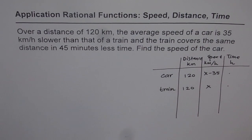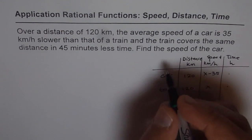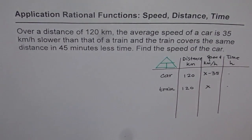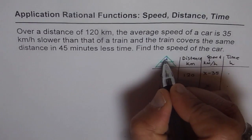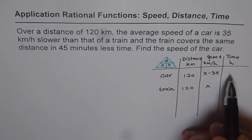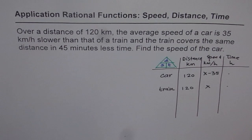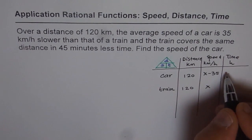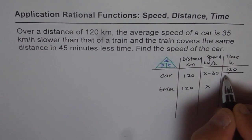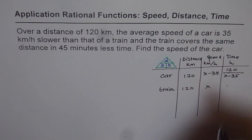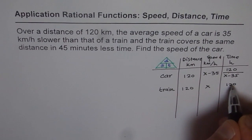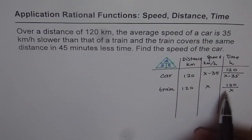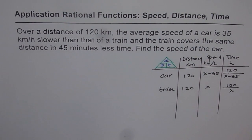Now, time taken is what? We can use the distance-speed-time triangle. Time equals the ratio of distance to speed. So time for the car is 120 divided by (x minus 35), and time for the train is 120 divided by x. The train is moving faster, so it takes 45 minutes less time.